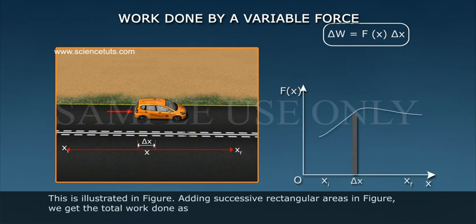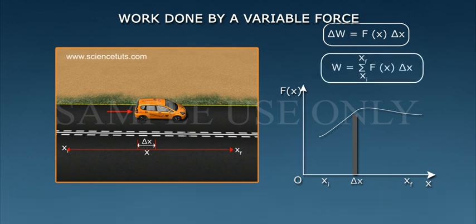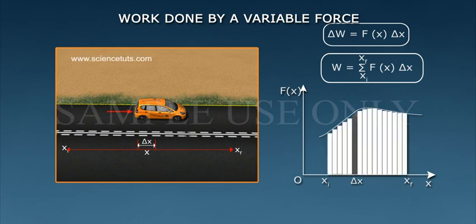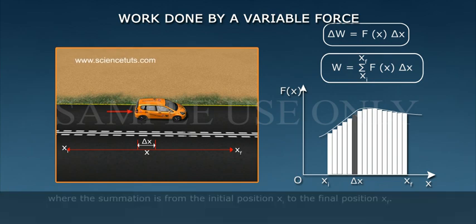This is illustrated in the figure. Adding successive rectangular areas in the figure, we get the total work done as W = Σ F(x)Δx from xi to xf, where the summation is from the initial position xi to the final position xf.